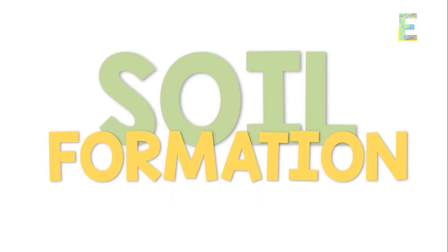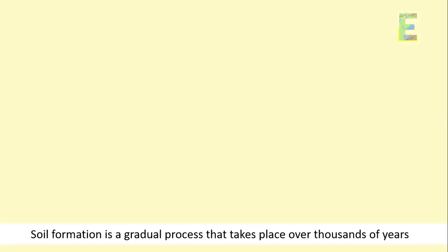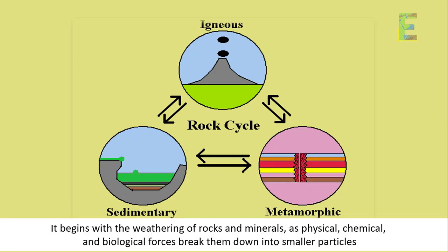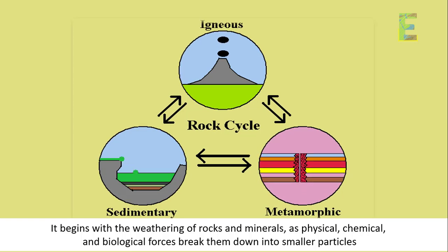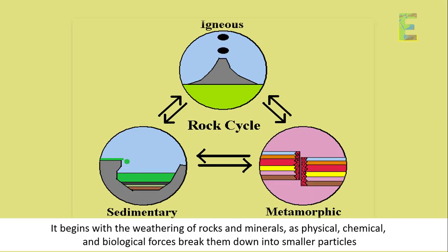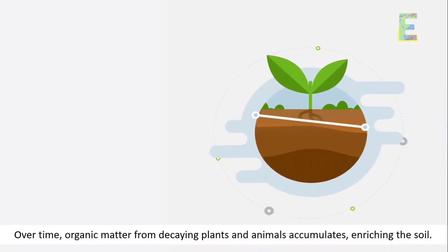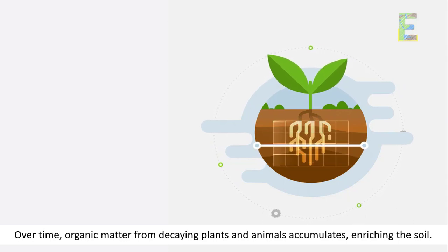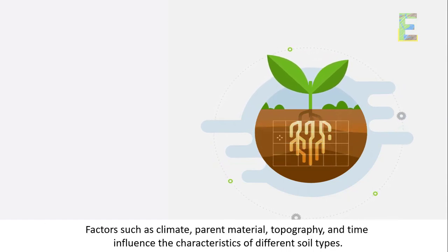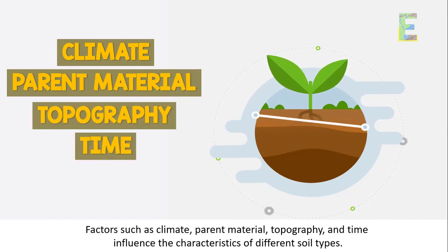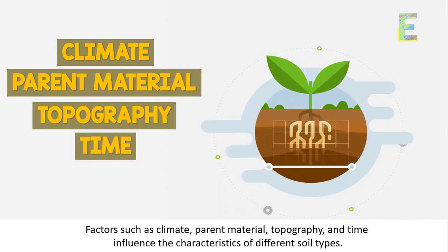Soil Formation. Soil formation is a gradual process that takes place over thousands of years. It begins with the weathering of rocks and minerals, as physical, chemical, and biological forces break them down into smaller particles. Over time, organic matter from decaying plants and animals accumulates, enriching the soil. Factors such as climate, parent material, topography, and time influence the characteristics of different soil types.